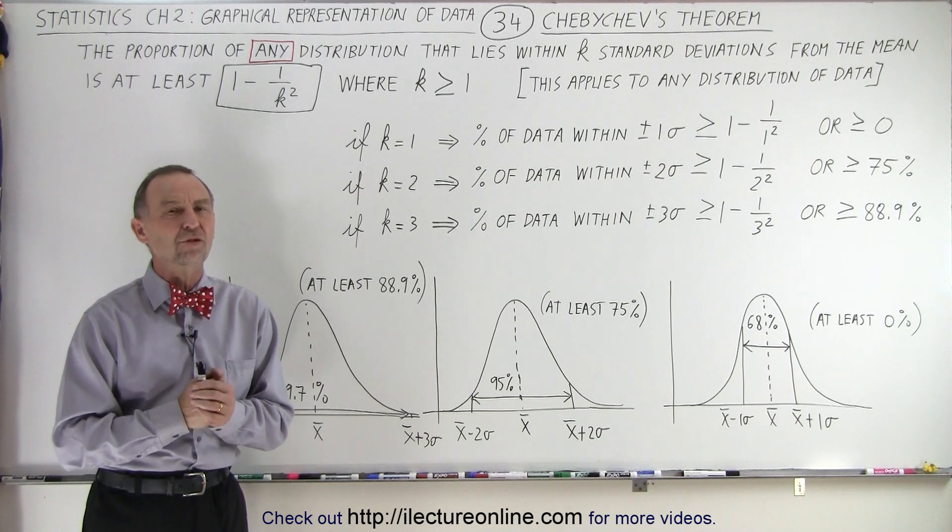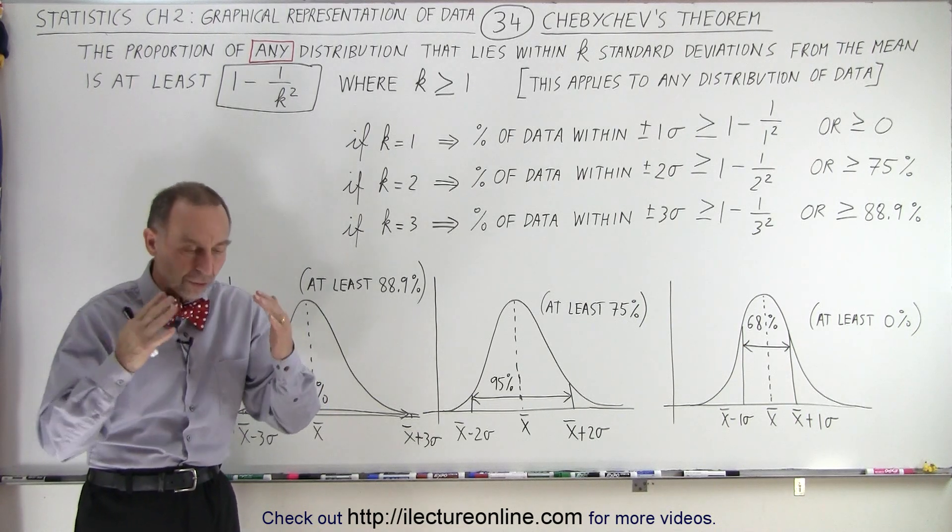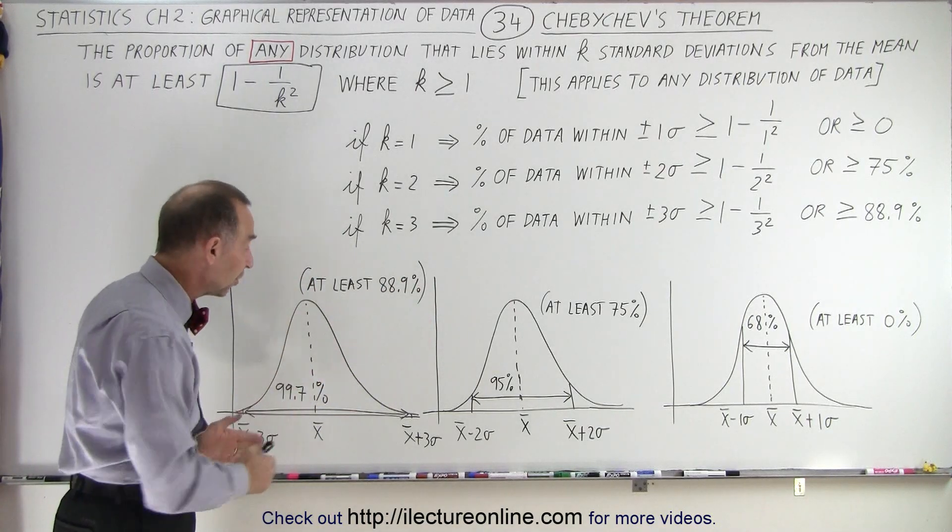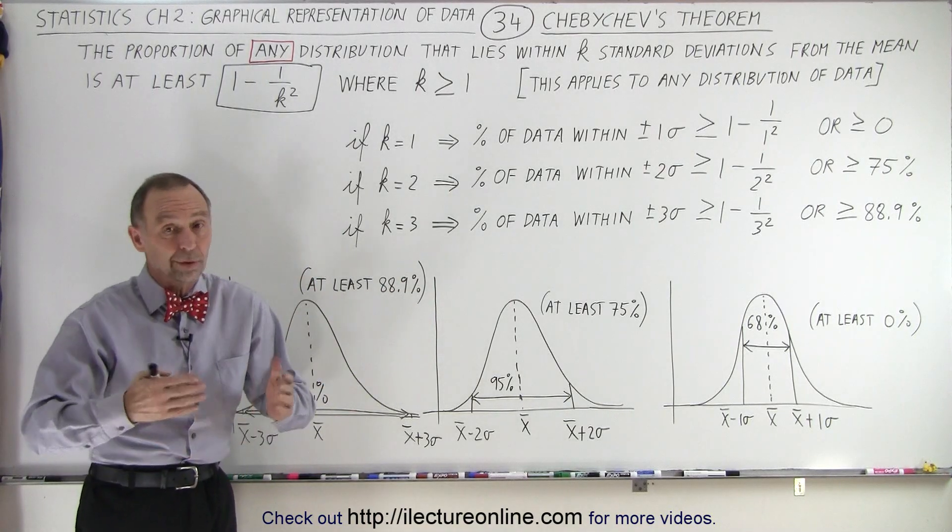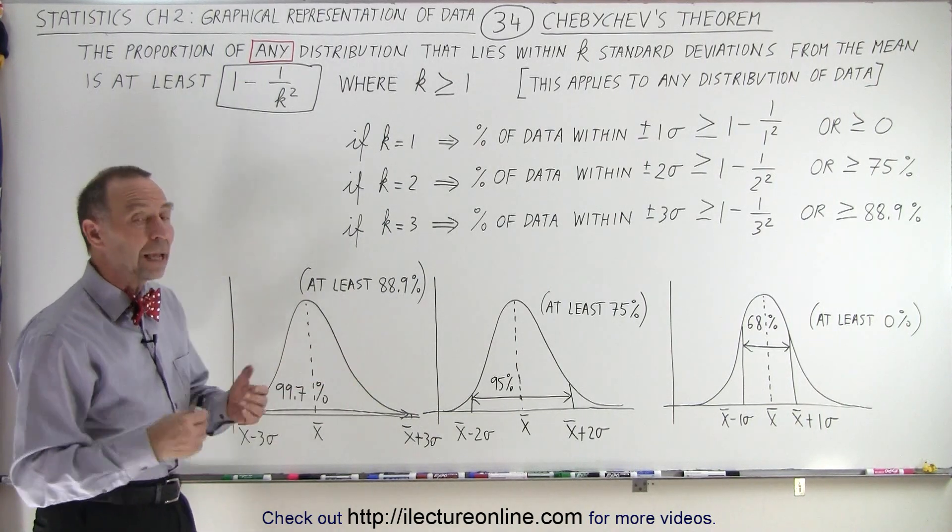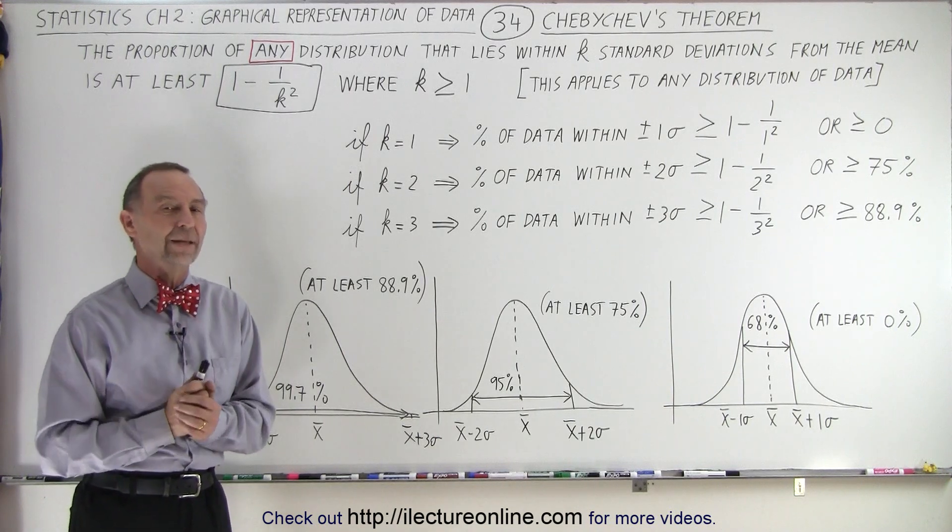But what if the data distribution is not normal? Is there some minimum amount that we can expect to fall within plus or minus one sigma, plus or minus two sigma, plus or minus three sigma, or any other number? Can we figure that out? And it turns out Chebyshev did just that.